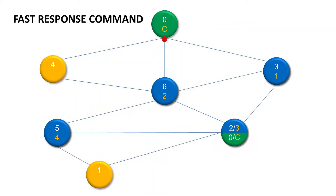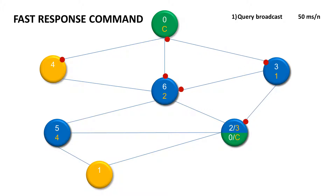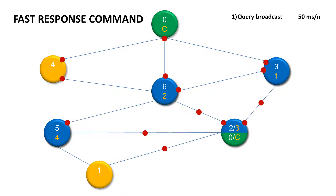For your better understanding, here is a visualization of the whole process. There are 3 phases. The first one is a broadcast of your query or command — let's say 'give me 1 byte temperature.' Here you can calculate 40 to 50 milliseconds for a hop, depending on how many bytes you send out.